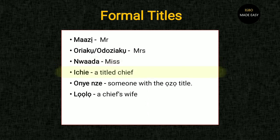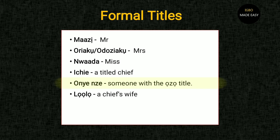Ichie is a chief — a titled chief. After Ichie we have Onyeze, who is someone with the Ozo title — about the equivalent of a knight in Igbo culture. The Ozo is the highest title in Igbo, like the knights of Camelot — custodians of culture. And Lolo is a chief's wife.